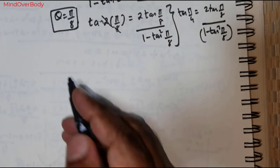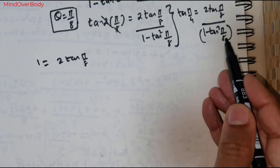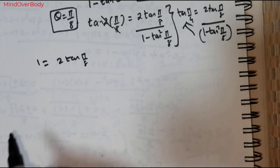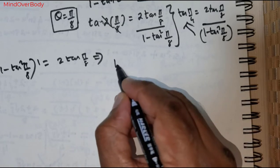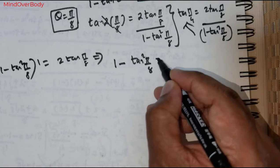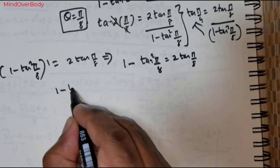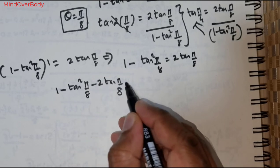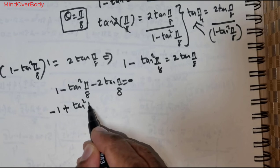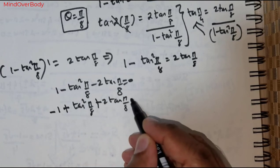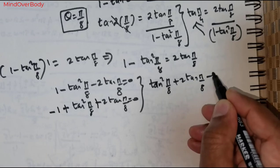Now tan(pi over 4) equals 1. So cross multiplying gives 1 minus tan squared(pi over 8) equals 2 tan(pi over 8). Moving everything to the left-hand side: 1 minus tan squared(pi over 8) minus 2 tan(pi over 8) equals 0. Multiplying by negative 1 and rewriting gives tan squared(pi over 8) plus 2 tan(pi over 8) minus 1 equals 0. This is a quadratic in tan.